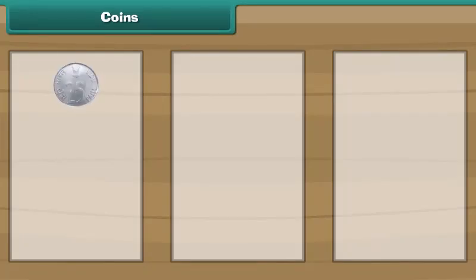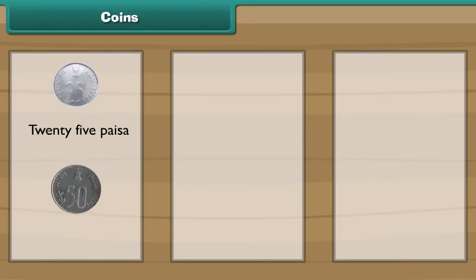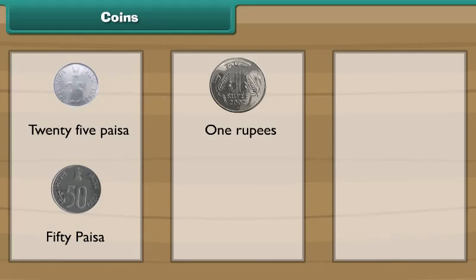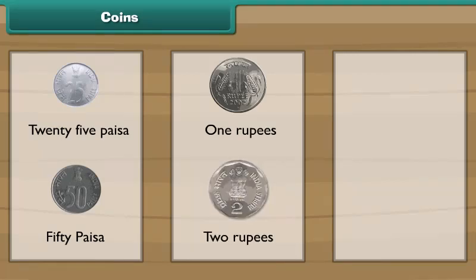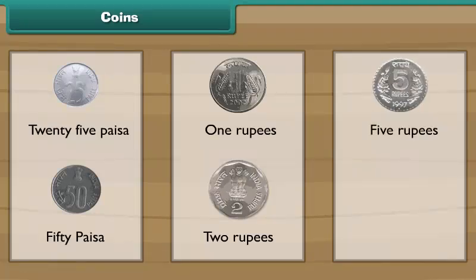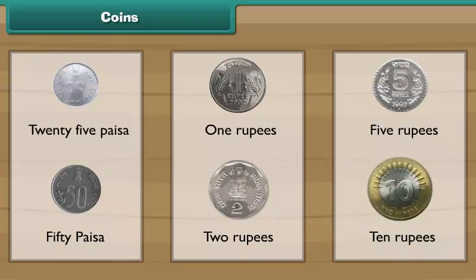Look at this small coin. It is a 25 paisa coin. Look at this slightly bigger coin. It is a 50 paisa coin. This is a 1 rupee coin. This is a 2 rupee coin. This is a 5 rupee coin. This is a 10 rupee coin. Now let us use these coins in different combinations.